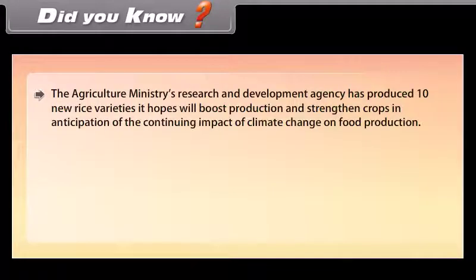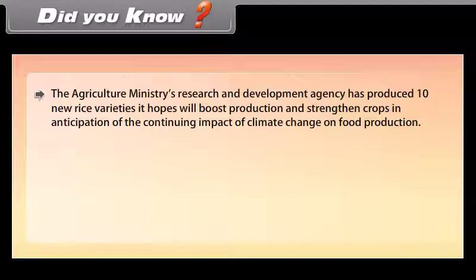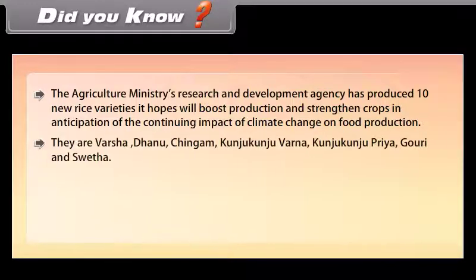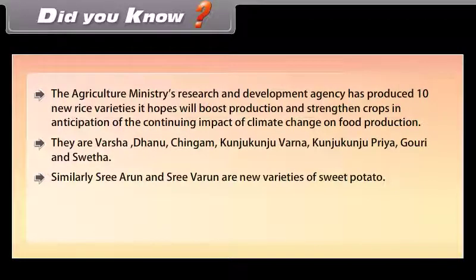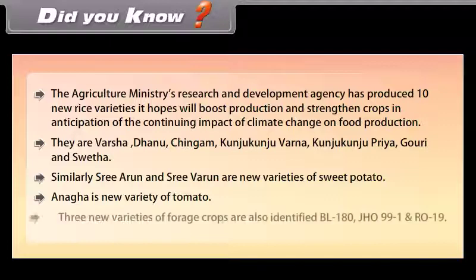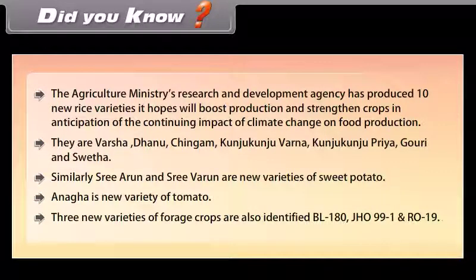The Agriculture Ministry's Research and Development Agency has produced 10 new rice varieties to boost production and strengthen crops against the impact of climate change on food production. They are Varsha, Dhanu, Chingam, Kunju-Kunju Varna, Kunju-Kunju Priya, Gauri and Swetha. Shri Arun and Shri Varun are new varieties of sweet potato. Anaga is a new variety of tomato. Three new varieties of forage crops are also identified: BL-180, JO-99-1 and RO-19.